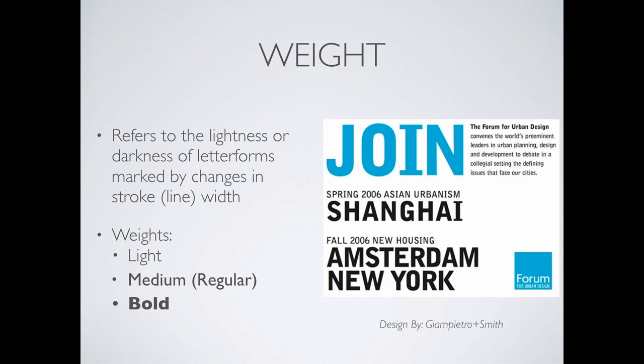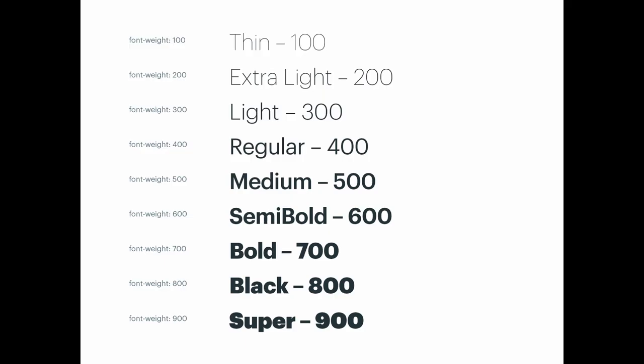We have light weights, medium or regular weights, and heavy weights — which would be bolds. If we look at the contrast here, we start at the very top with thin — the lightest, thinnest stroke weight. We move up through extra light, light, regular, medium, semi-bold, bold, black, and super.